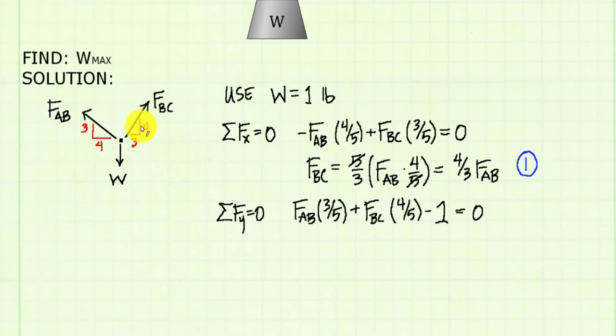And for force BC, it's times 4/5, because 4 is the vertical component of our similar triangle. Minus 1, our weight that I'm assuming for now. Set it equal to 0. I'll call that equation 2.